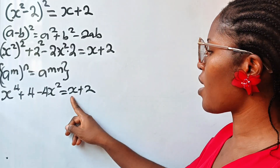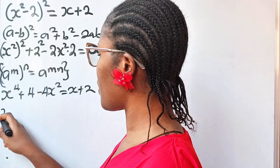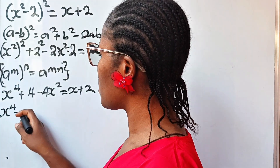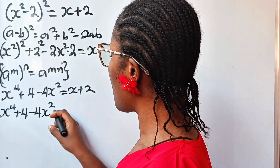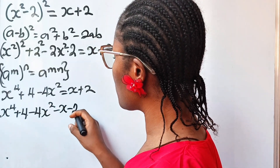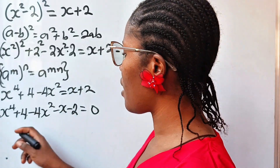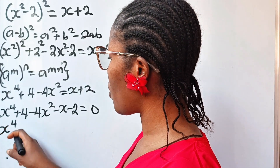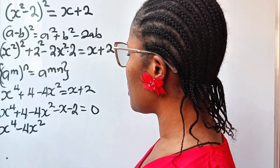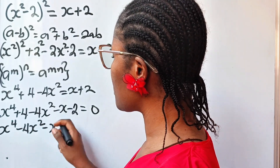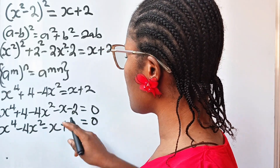Now let's transfer x + 2 to the other side. So we have x⁴ + 4 - 4x² - x - 2 = 0. Simplifying, we get x⁴ - 4x² - x + 2 = 0.